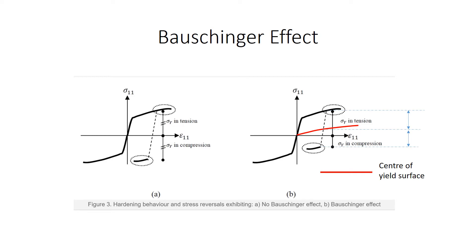The main idea for the model is to imagine a center for the yield surface, as depicted by the red line shown on the right curve. This red line divides the distance between the point representing the yield in tension and the point representing the yield in compression, so the distance from this point to the red line is equal to the distance between the red line and the yield stress in compression. The equation describing the center of the yield surface is traditionally denoted by the variable alpha and is termed the back stress.